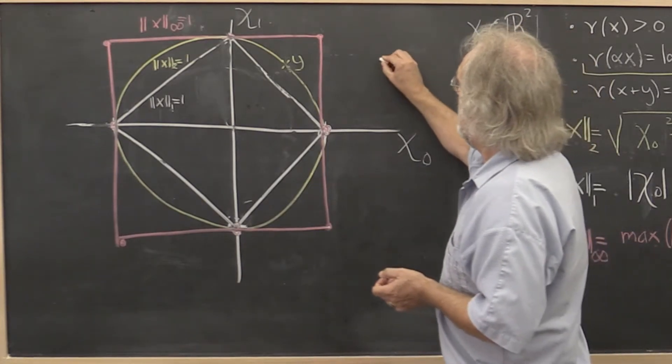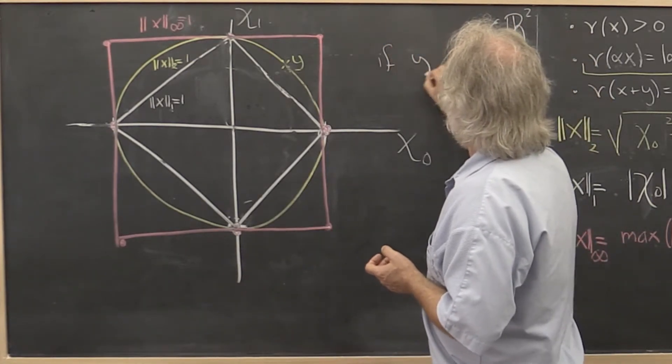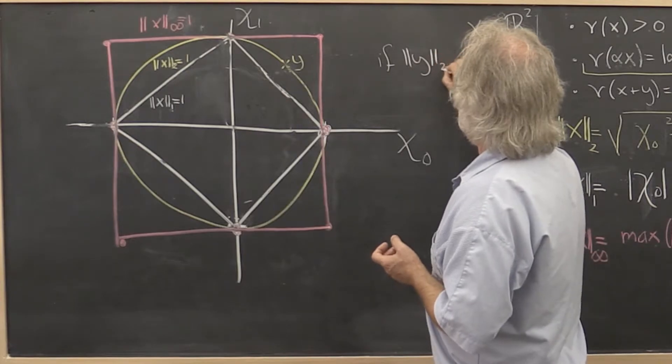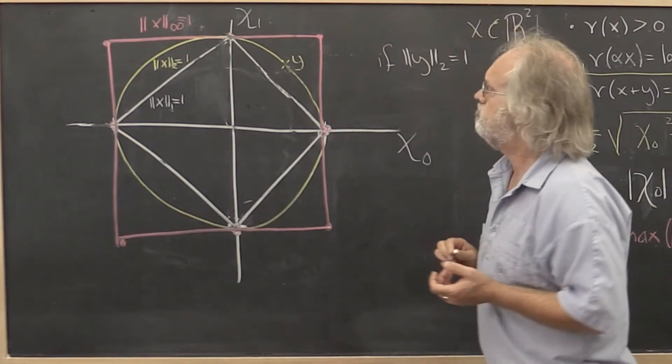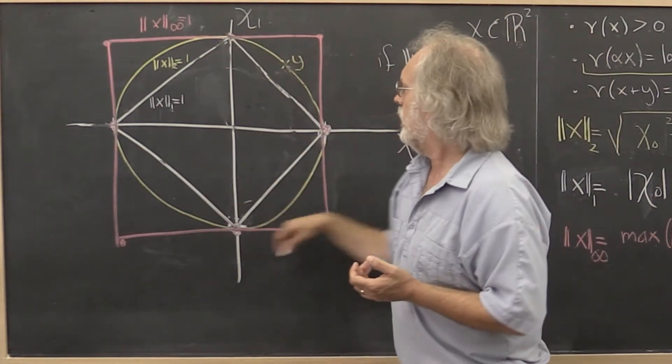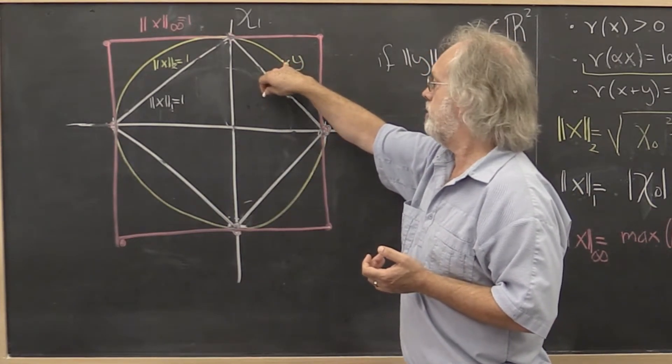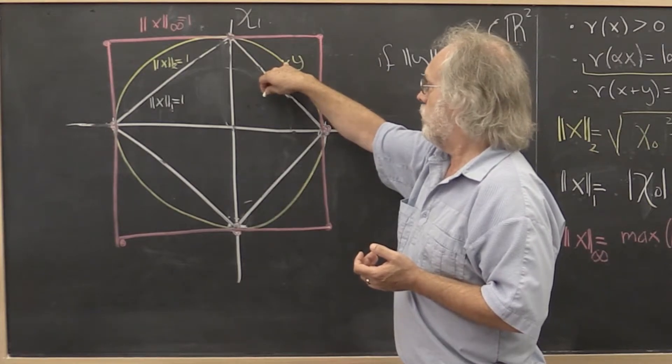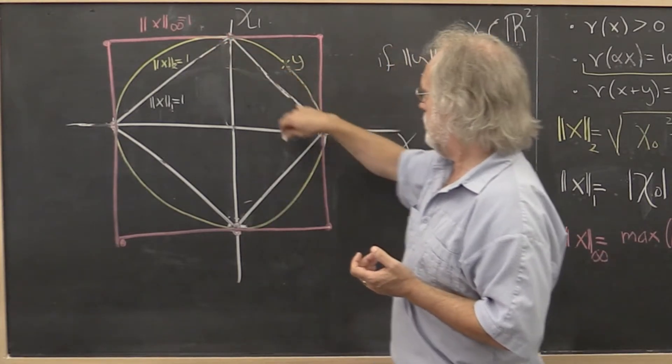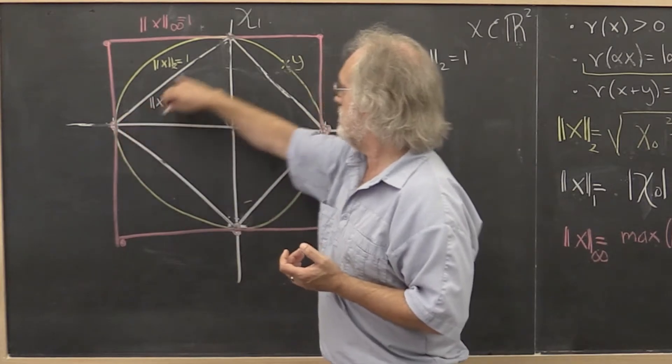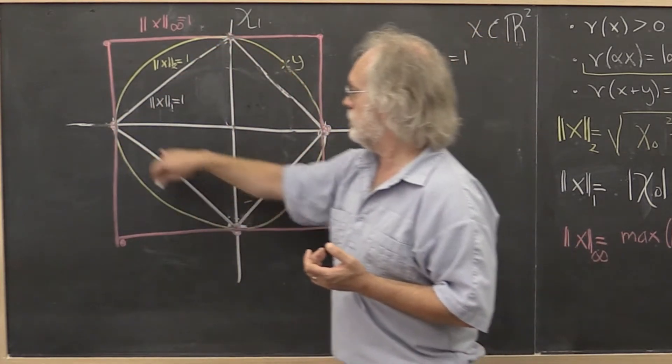Well, we can say if y has a 2 norm equal to 1, what do we know then? We know that it exists somewhere on the unit ball for the 2 norm. Then let's look at the unit ball for the 1 norm. This is where the 1 norm is equal to 1.